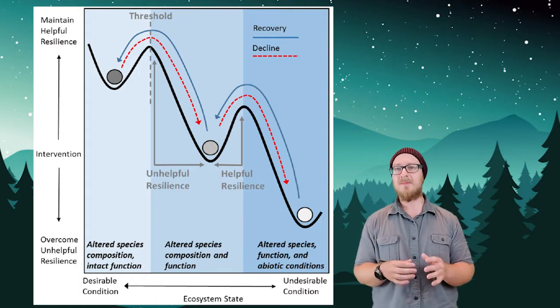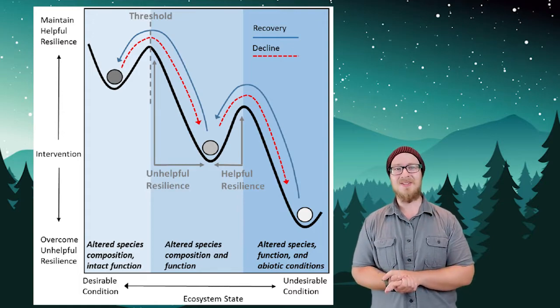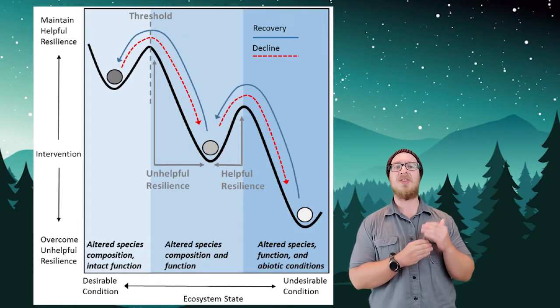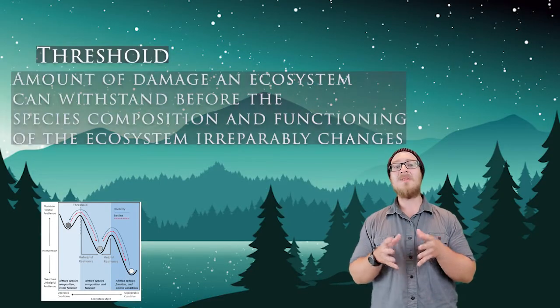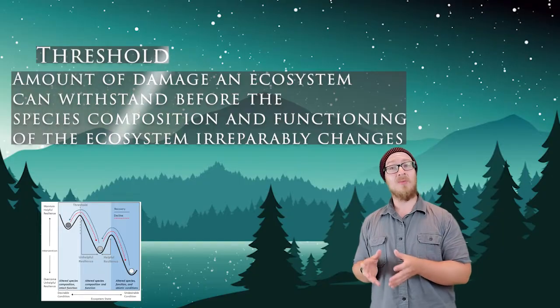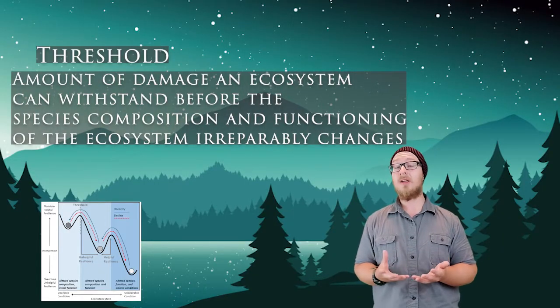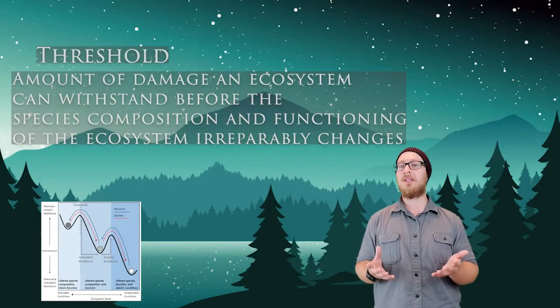Every ecosystem is resilient to certain disturbances like fires or major storms, floods, droughts, and other relatively minor disturbances. The key to understanding this concept is the threshold, or the amount of damage an ecosystem can withstand before the species composition and functioning of the ecosystem irreparably changes.